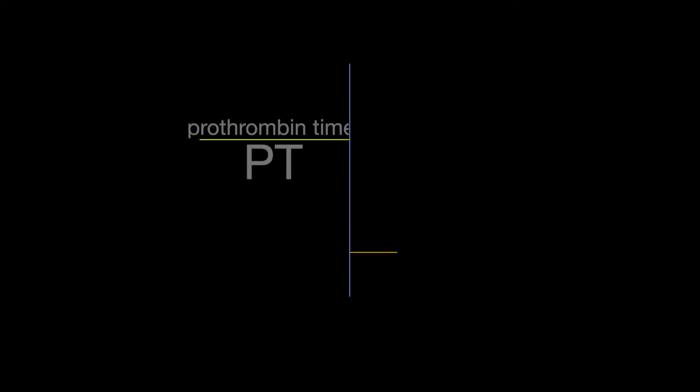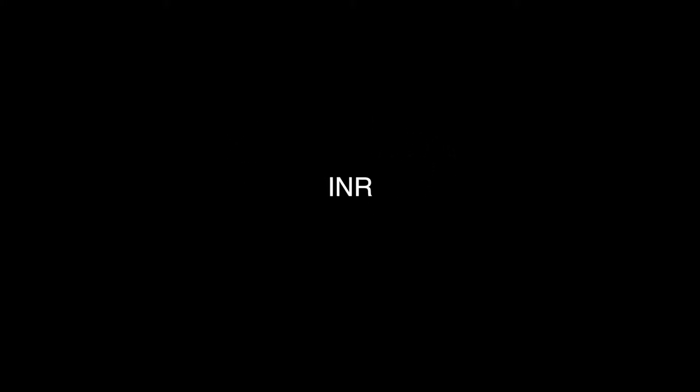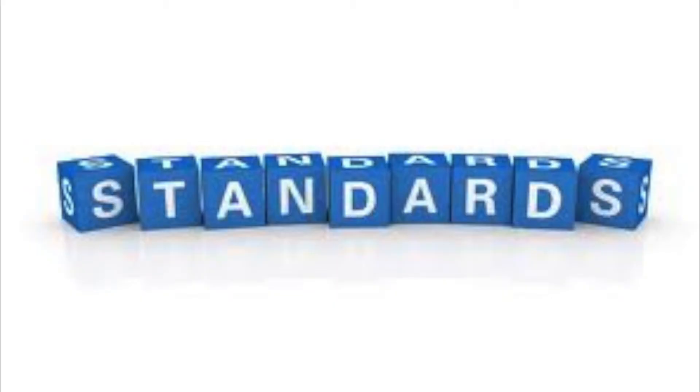PT detects and evaluates your extrinsic system down to the formation of a clot. So it's only detecting and only dealing with these things right here. We have 7, 10, 5, 2, and 1. The international normalized ratio is just a standardized way of doing it.